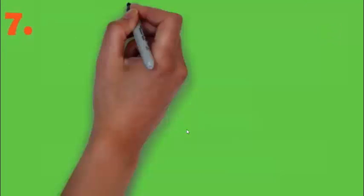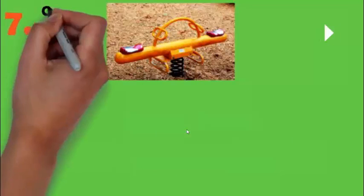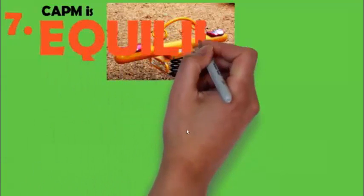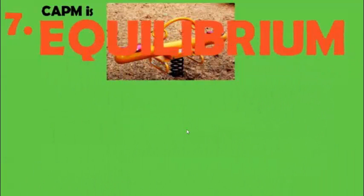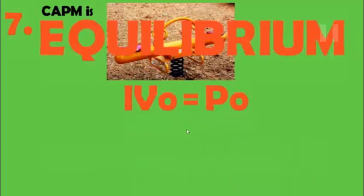Now the seventh, the most important assumption of CAPM. It is the balance or the equilibrium. Because the CAPM model is an equilibrium model, equilibrium model where IV zero is equal to P zero. Now what is IV zero? That is the intrinsic value is equal to price.